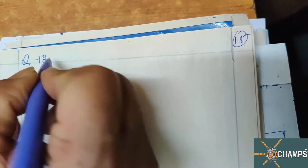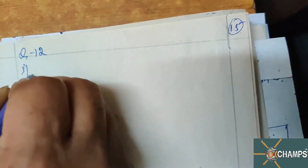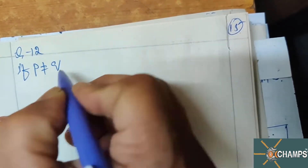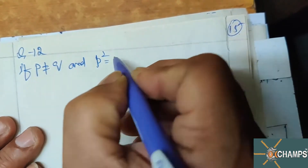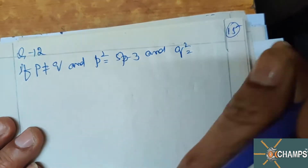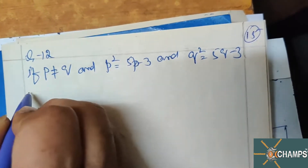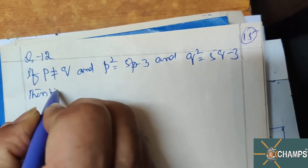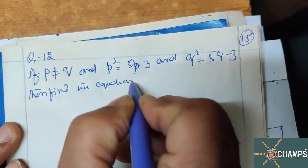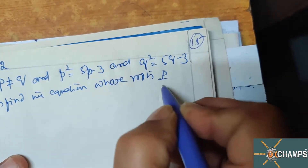We are in the process of doing quadratic equations. Let us go to question number 12 of exercise 2F. If p is not equal to q, and p² = 5p - 3 and q² = 5q - 3, then find the equation whose roots are p/q and q/p.